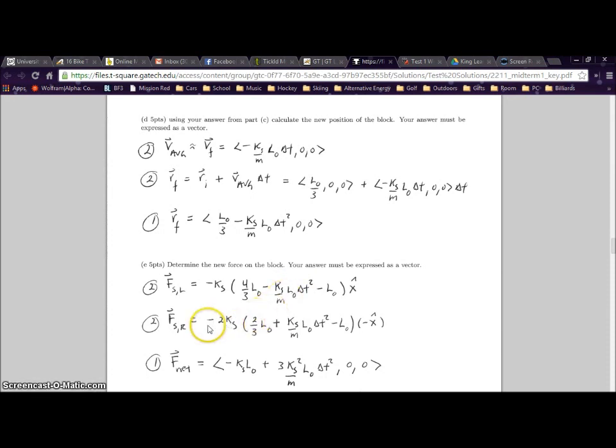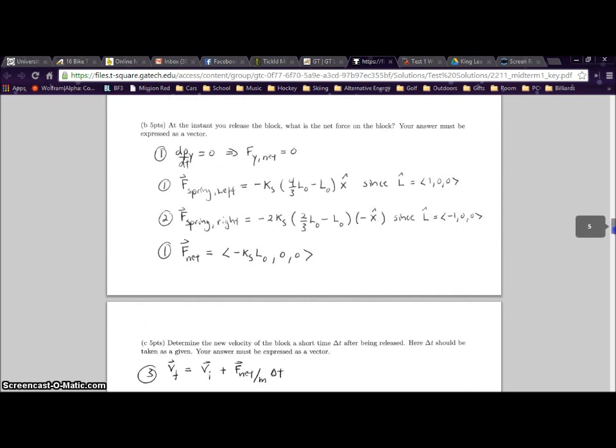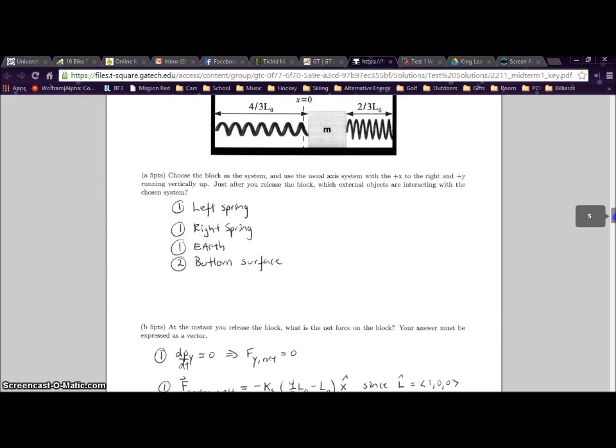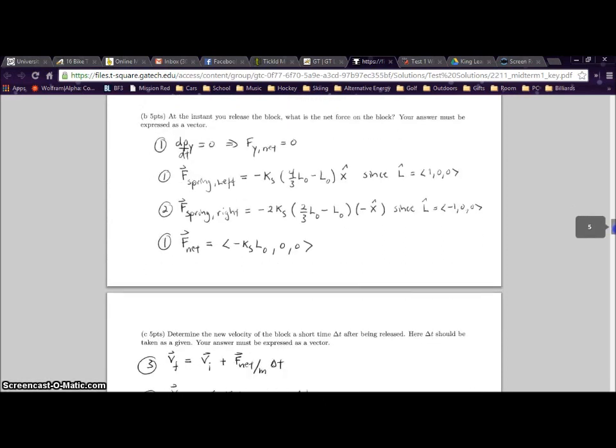With the right spring, it's basically the same thing. In part B, we have negative 2KS because it was twice the spring force as the spring on the left. Then we have 2/3 L0 minus L0 because that was the change in distance. And we have it multiplied by negative X because the spring on the right acts opposite in relation to the spring on the left.